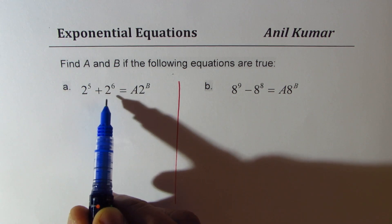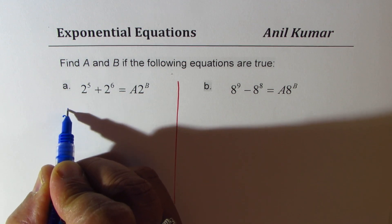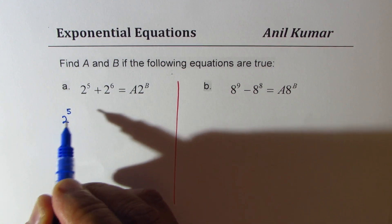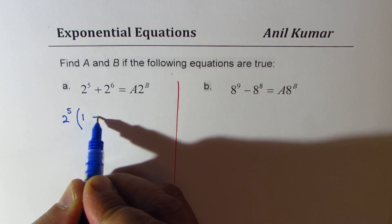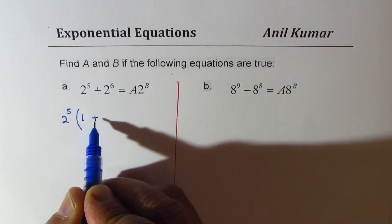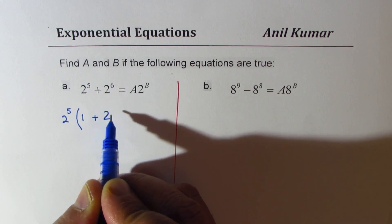Now in 2^5 and 2^6, you can take 2^5 common, correct? So that is the trick. Once you do that, you get 1 plus 2. So 2^5 times 2, giving you 1 + 2.